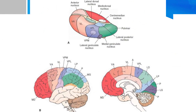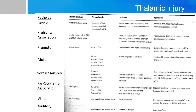A color-coded summary of the thalamic nuclei and their cortical projections is provided. There is a lot of detail in this video, and it can be daunting. The important approach is to understand what each general group of nuclei does, and then make an educated guess on the exam based on that general direction. A summary table lists the different thalamic groups with their principal pathways, functions, and symptoms when a specific nucleus is injured.